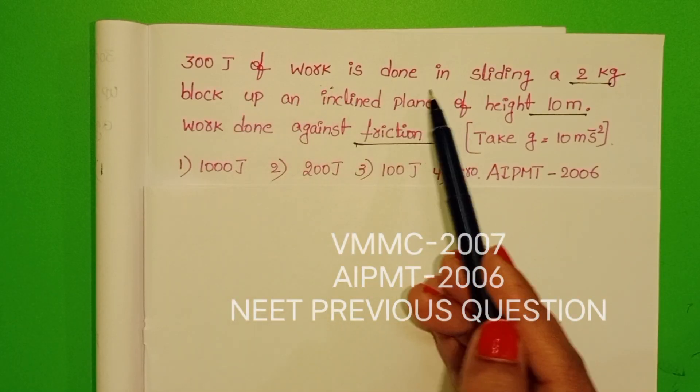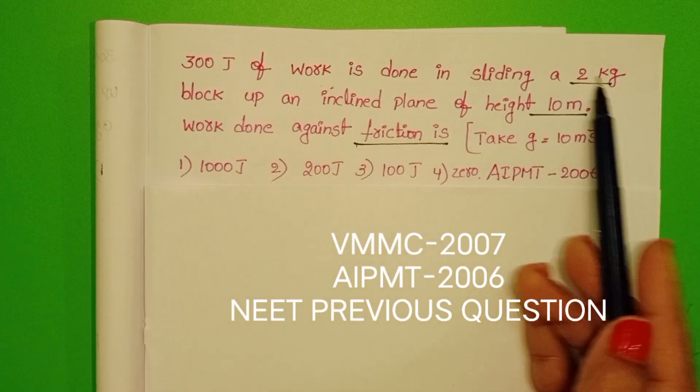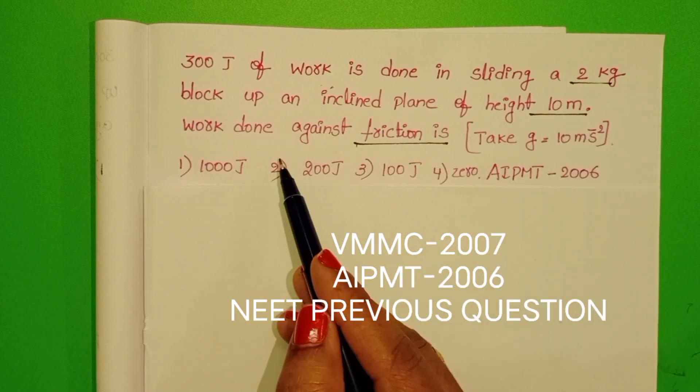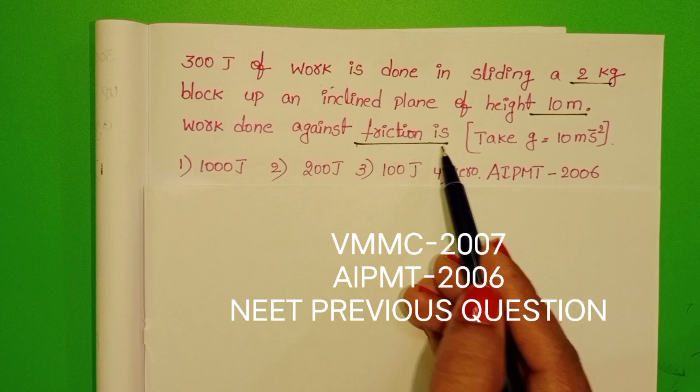300 Joules of work is done in sliding a 2 kg block up an inclined plane of height 10 meters. Work done against friction is?